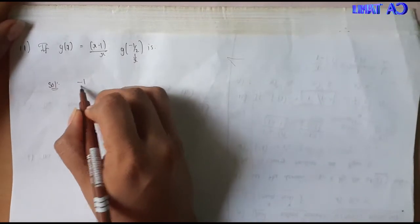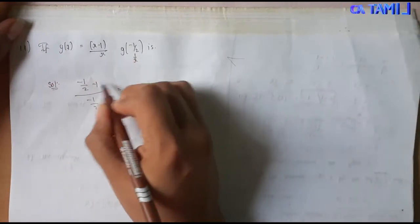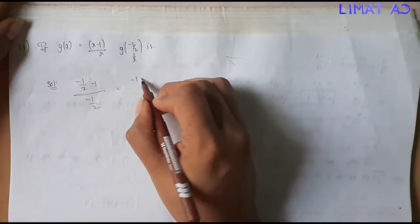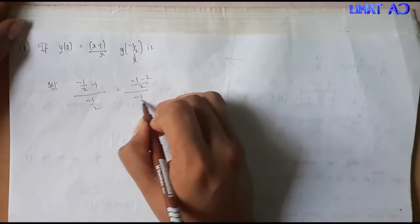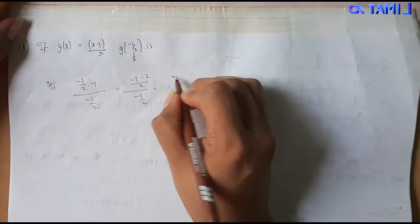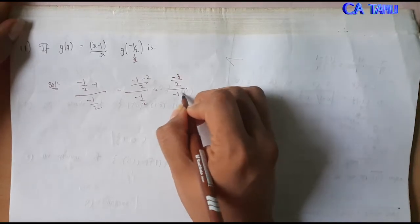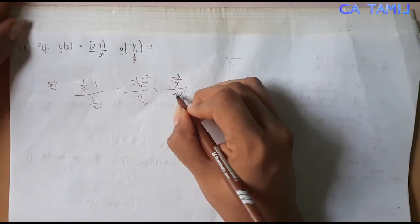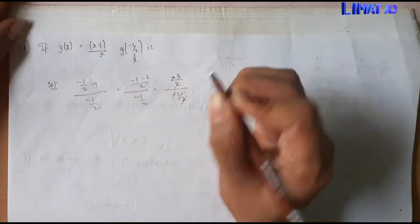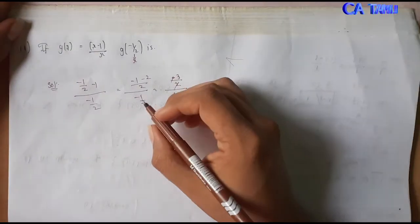Let's solve this. We need to substitute x minus 1 divided by x equals minus one by two. So x minus 1 divided by x equals minus one by two. Let's solve: the numerator becomes minus 2 divided by 2, whole divided by minus one by two. We can multiply by 2. The minus signs cancel, and the remaining answer is 3. So this is option D.